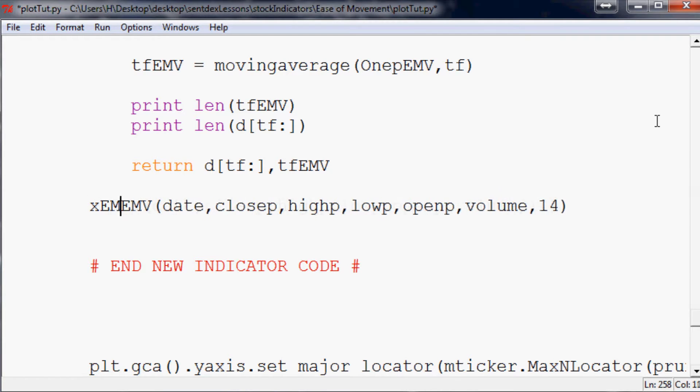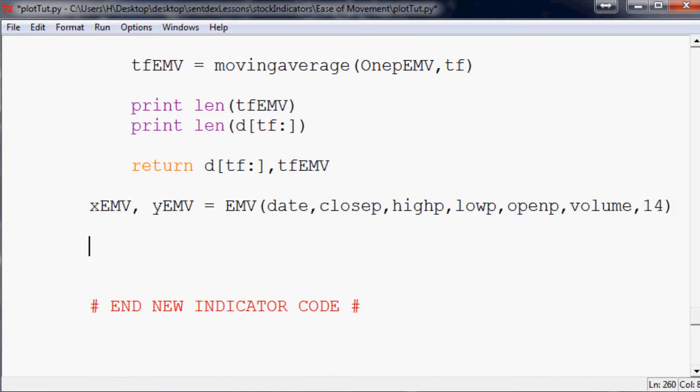Now what we need is xEMV, yEMV equals - this returns two variables, right? The date and the actual value. Now all we need to do is ax2.plot(xEMV, yEMV). What color do we want it? We'll plot it as white. Just go ahead and run that and see what we got going so far.